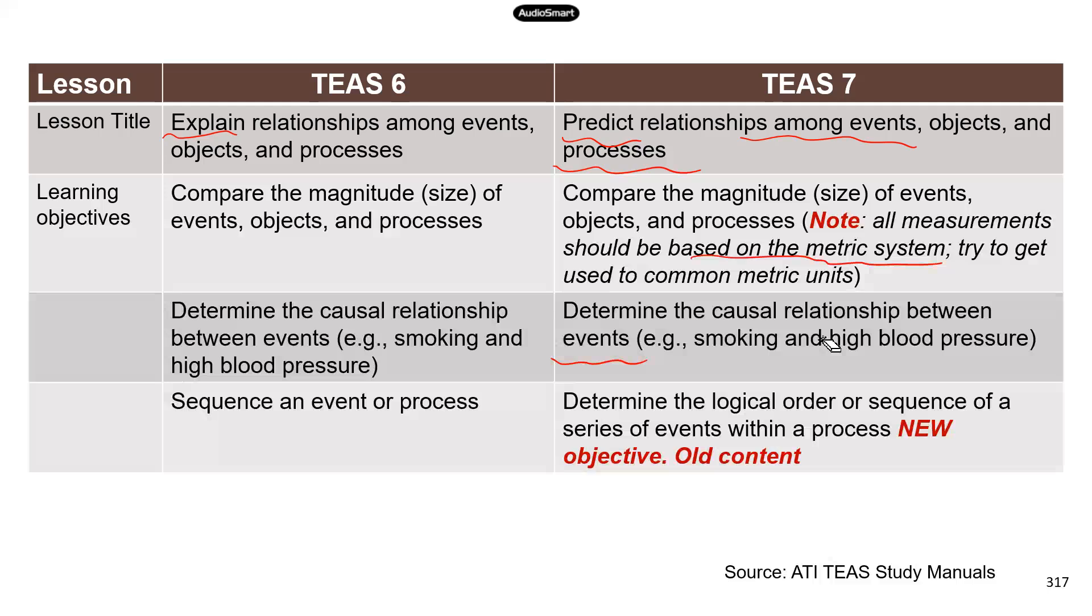And the last one is just put things in the logical order or correct the sequence. So even though it's a new objective, it's really just old content that came from TEAS six, because, you know, these learning objectives are pretty much the same as just new wording in TEAS seven. So all in all, there is very little change. So let's just go ahead and do some practice questions.